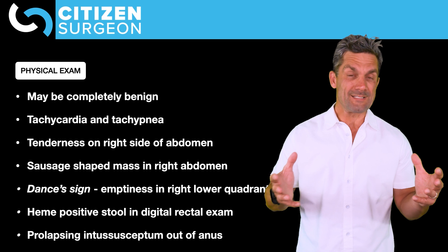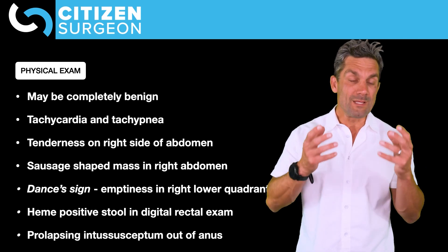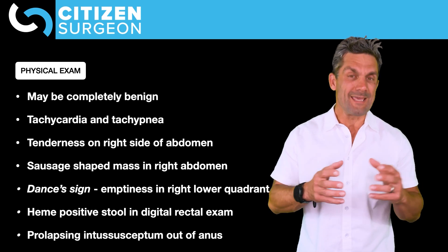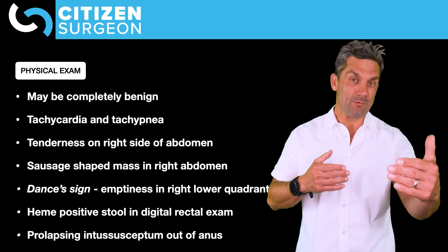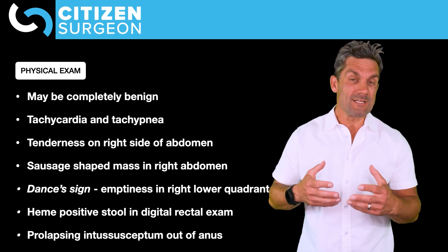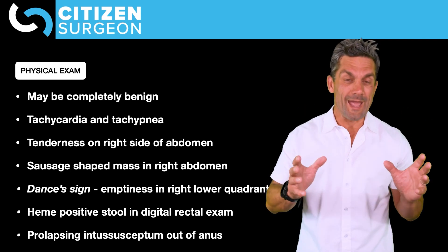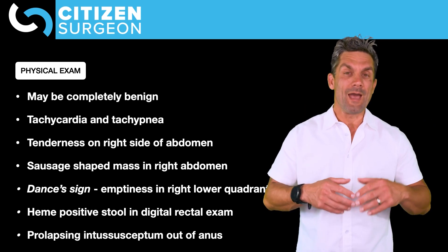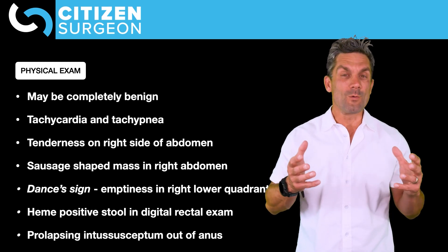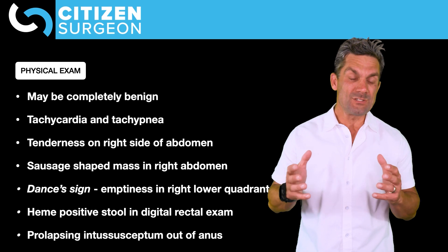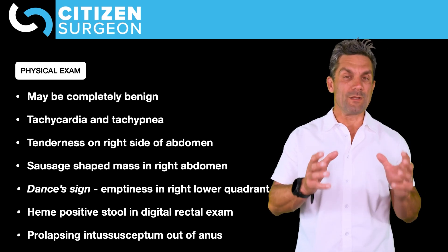You may even have peritonitis if this is severe intussusception. If you find peritonitis on exam, you have to be concerned about bowel ischemia and bowel perforation — that may lead you to the operating room. On examination of the abdomen, you may find this sausage-shaped mass. We talked about that triad of intussusception: abdominal pain, a sausage-shaped mass, and currant jelly stool, seen in less than a third of patients.